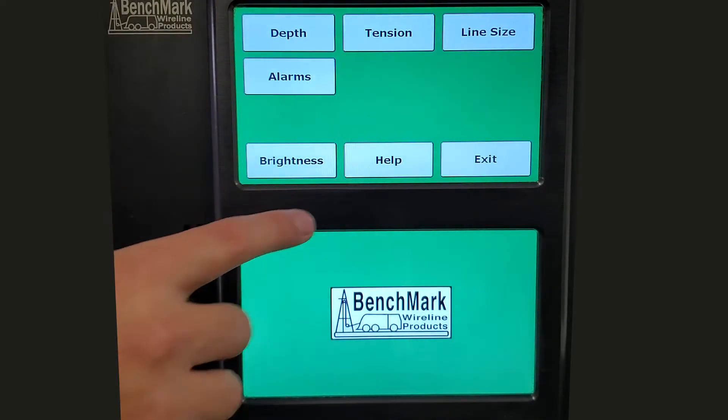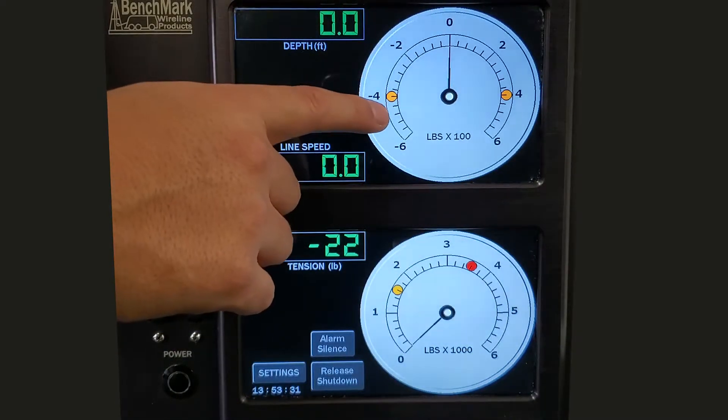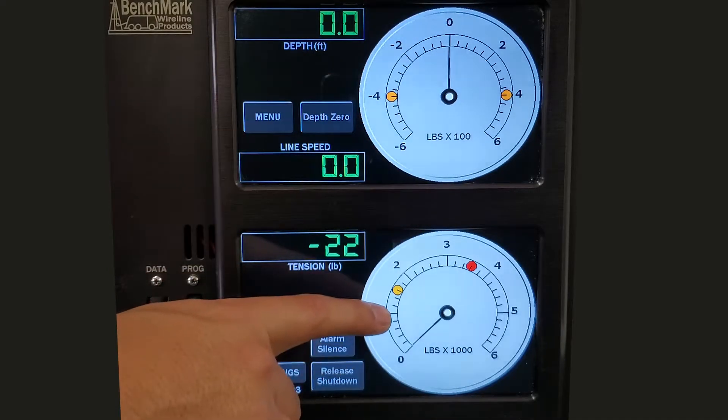When finished, press Back and then Exit. You'll now see the alarm and shutdown bubbles have moved to the values that you just entered.